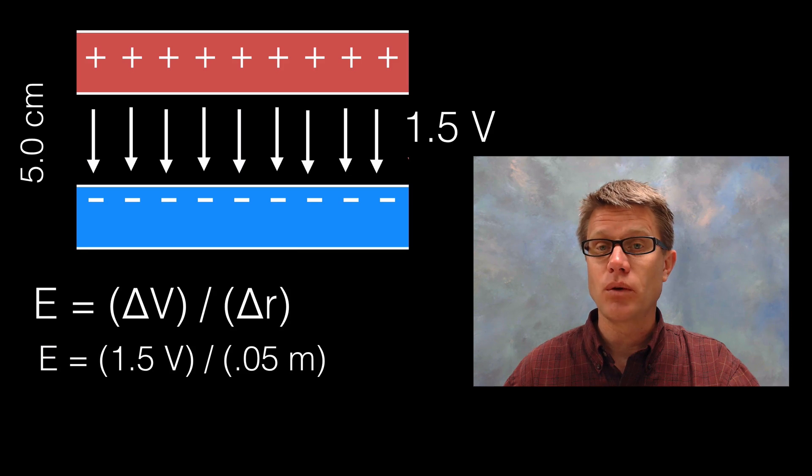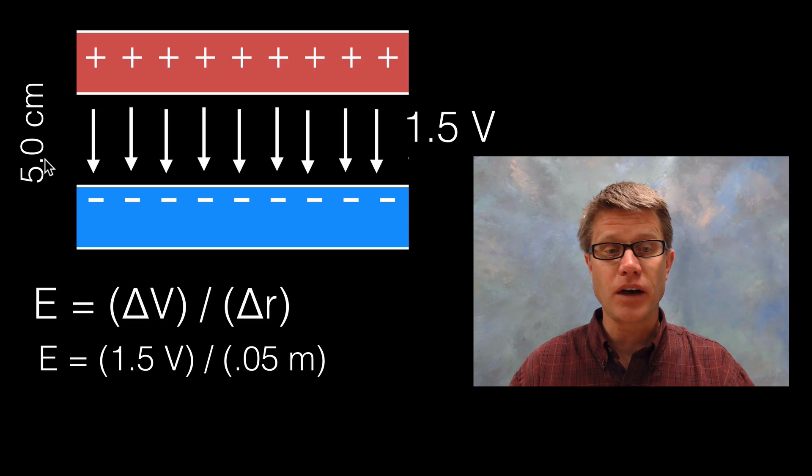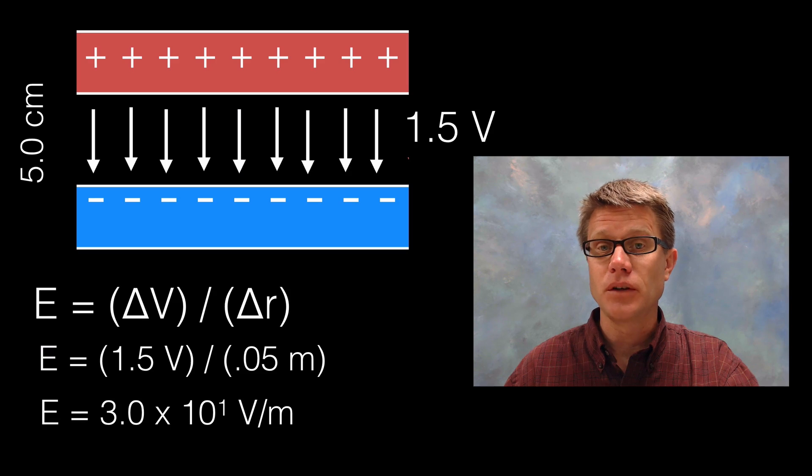What's going to be our change in voltage? It's going to be 1.5. What's our displacement? You can see right here that I've changed this from 5.0 centimeters to 0.05 meters. Now I simply multiply it and that's going to be my electric field strength or electric potential between the two.